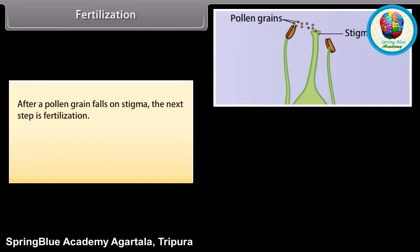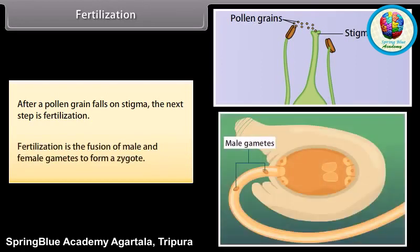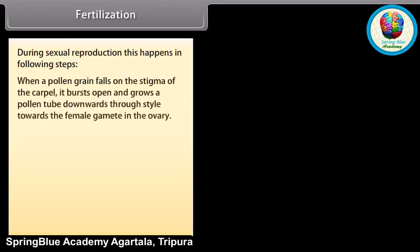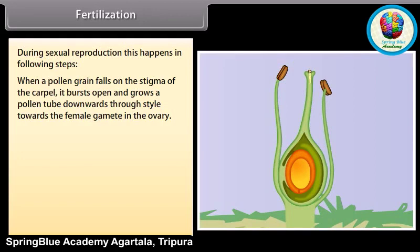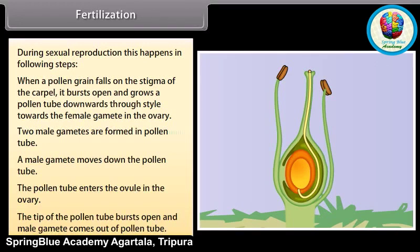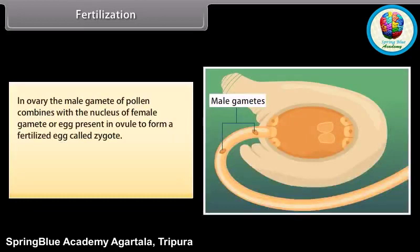After a pollen grain falls on the stigma, the next step is fertilization. Fertilization is the fusion of male and female gametes to form a zygote. When a pollen grain falls on the stigma of the carpel, it bursts open and grows a pollen tube downwards through the style towards the female gamete in the ovary. Two male gametes are formed in the pollen tube. The pollen tube enters the ovule in the ovary, and its tip bursts open, releasing the male gamete. In the ovary, the male gamete of the pollen combines with the nucleus of the female gamete (egg) present in the ovule to form a fertilized egg called the zygote.